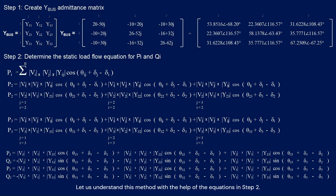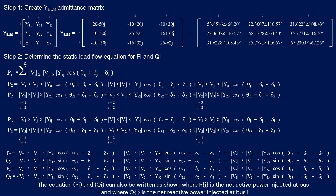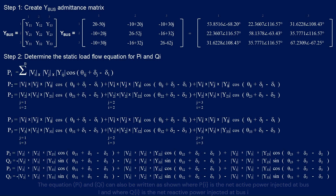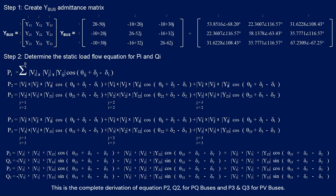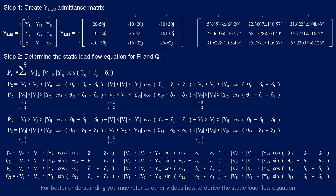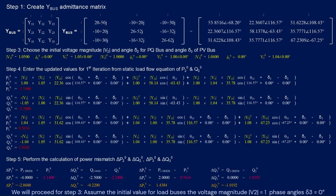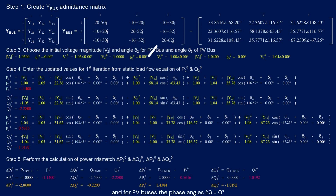Step 2: The equations P_i and Q_i can be written as shown, where P_i is the net active power injected at bus i and Q_i is the net reactive power injected at bus i. This is the complete derivation of equations P_i and Q_i for PV buses. For better understanding, you may refer to other videos on how to derive the static load flow equations. Step 3: Assume the initial values for load buses — voltage magnitude equals 1 and phase angle equals 0 degrees.